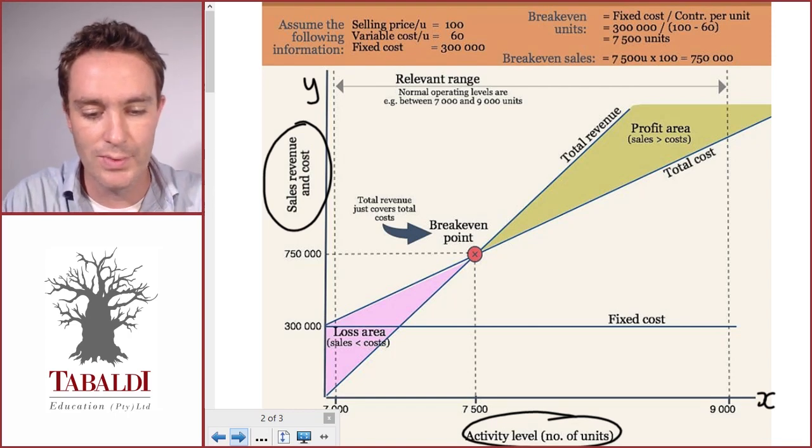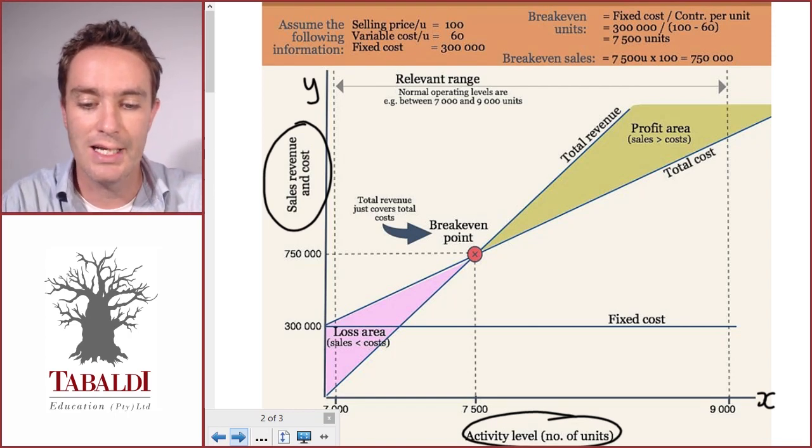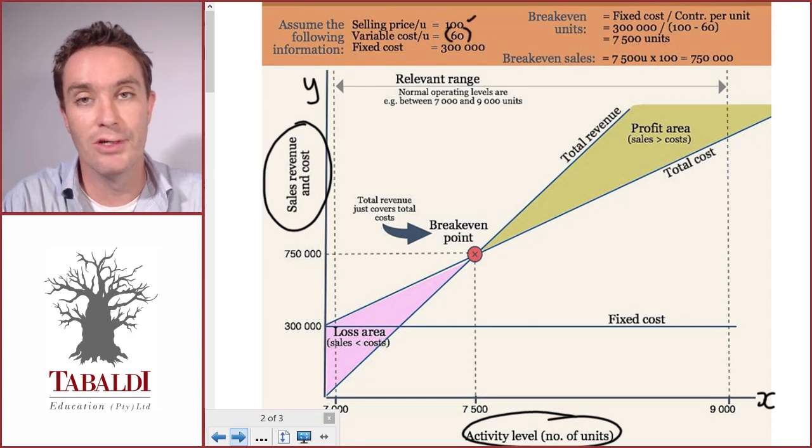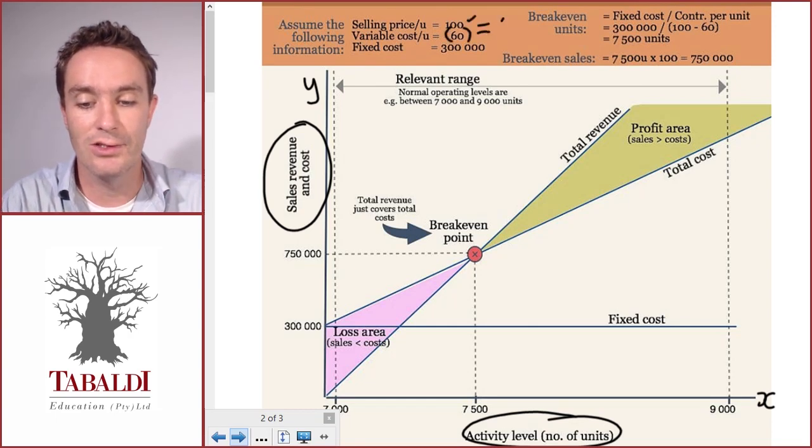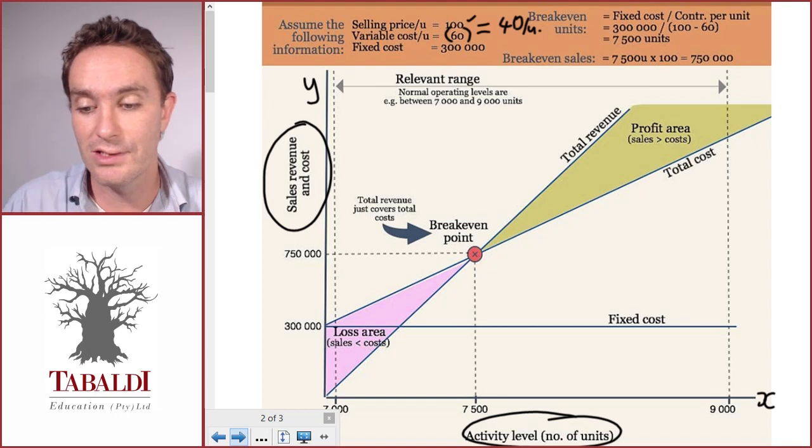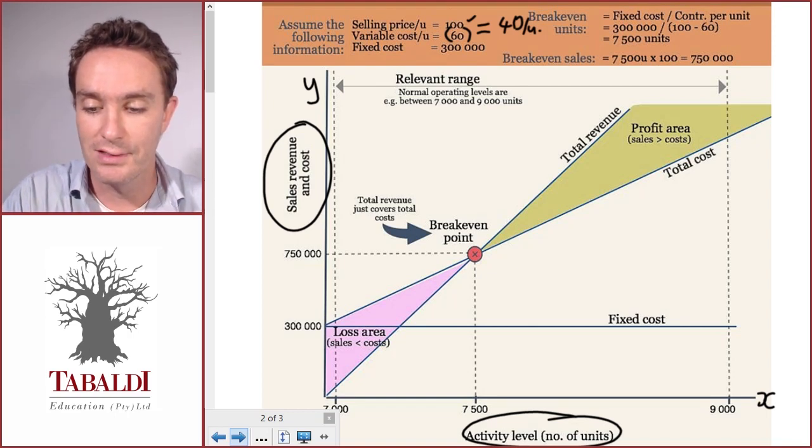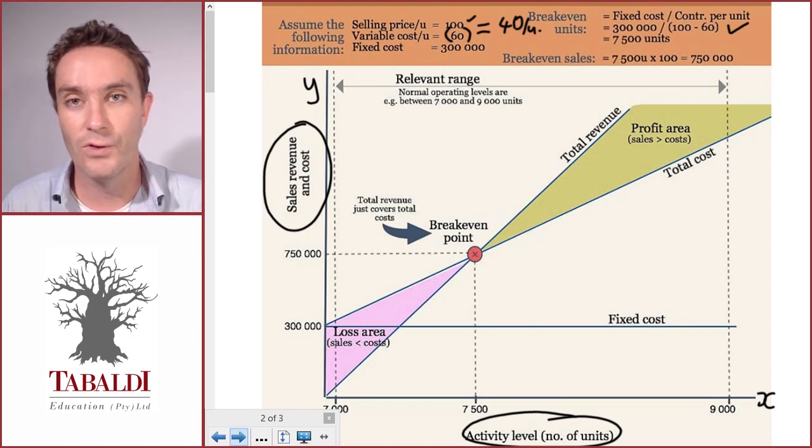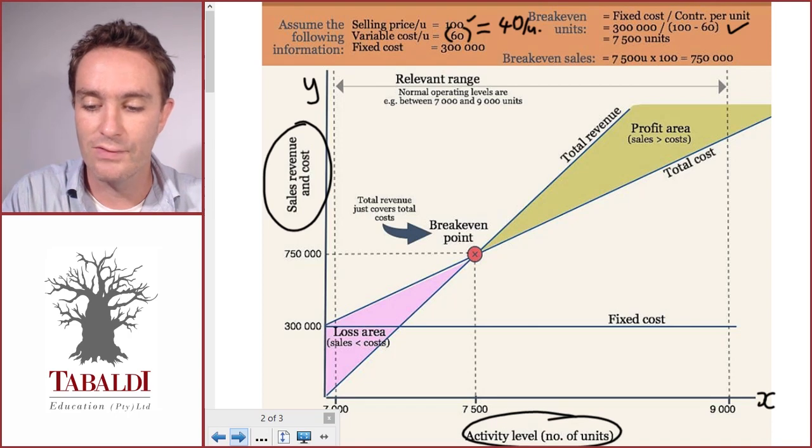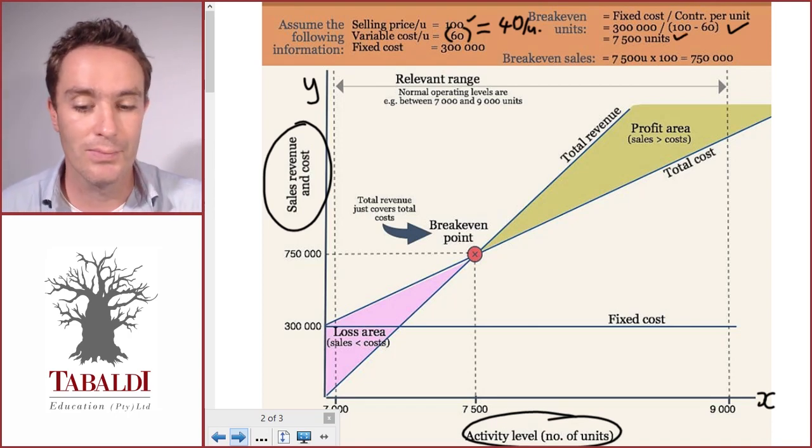Let's first look at the example. Assume the following information: we've got a selling price per unit of 100, variable cost per unit of 60, which gives us a contribution of 40 per unit. Fixed cost is 300,000, so we can calculate the break-even: 300,000 divided by 40 per unit contribution gives us 7,500 units.